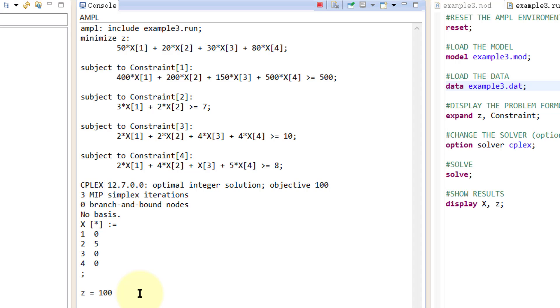If we don't have the integer instruction, the optimal solution is x2 equals 3.5, x3 equals 0.75, x1 and x4 are 0, and z equals 92.5, which is different from what we have here.